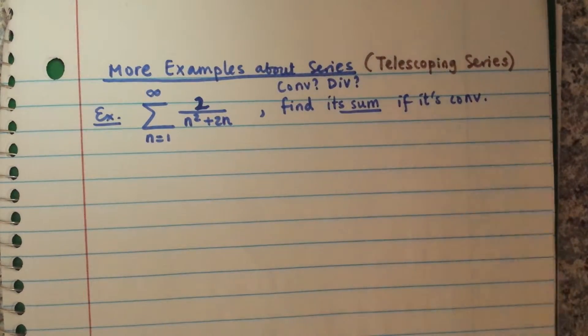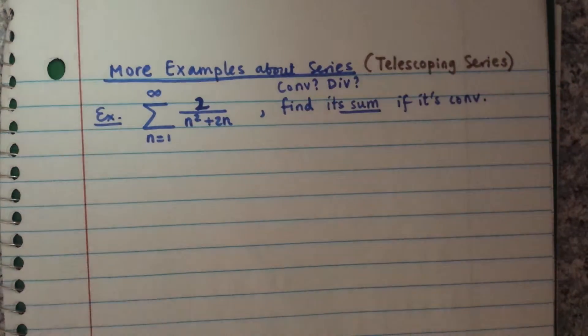So when it says find its sum, for a problem of this type, of course you can use, for example, the limit comparison test to confirm it is convergent. But to find its actual sum, since this is not geometric, the other option is the telescoping series — you're going to try to find the partial sum Sn.